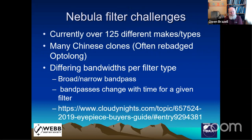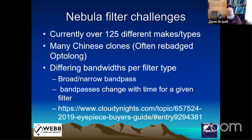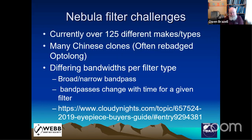There are still a number of challenges when purchasing filters. It may be a surprise to know there are about 125 different makes and types of these filters. Many of them are Chinese clones, often rebadged from one maker, and the quality control isn't necessarily what you'd hope — different batches may have different bandpasses which can change over time. This makes it quite difficult to recommend a specific filter to a person. It's not just the Chinese who've had this problem — Lumicon, one of the main filter makers, went through stages where their filters weren't as consistent as hoped. On the Cloudy Nights forum there is a nebula filter spreadsheet which will tell you a lot about them.